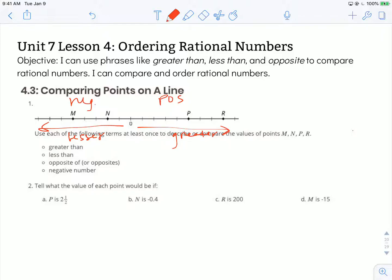So let's go ahead and use some phrases to describe these points and how they compare to one another. We want to use greater than. We could start with the one that's the greatest of them all which is R, and so we could say that R is greater than P. We could also say R is greater than N and R is greater than M. But we could choose any of these that's to the right of another. We could even say that N is greater than M.